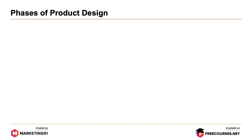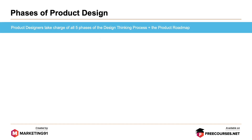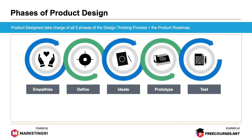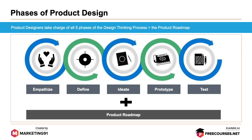Phases of product design: product designers take charge of all five phases of the design thinking process plus the product roadmap. The five phases are: empathize, define, ideate, prototype, and test — plus the roadmap.